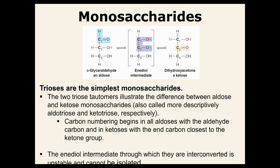Our simplest monosaccharides have three carbons — those are the trioses. D-glyceraldehyde is an aldose, meaning it has an aldehyde group. It is in equilibrium with its ketose form through what's called an enediol intermediate. The enediol is very unstable, so it's hard to isolate. When you have that scenario, the aldose and ketose are called tautomers of each other.